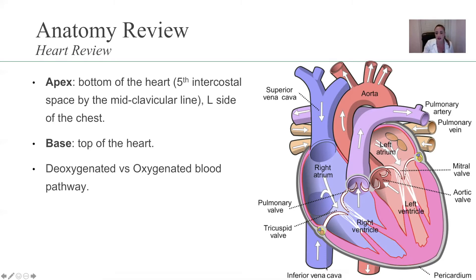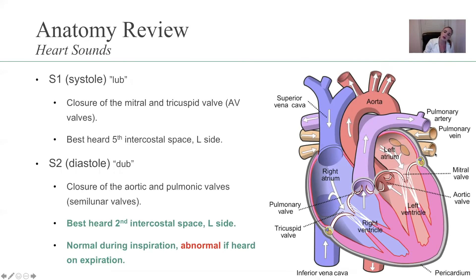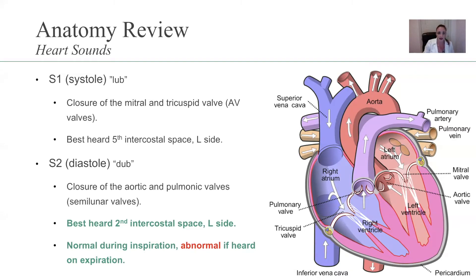What I need you to remember is the way oxygenated versus deoxygenated blood travels. You have the inferior vena cava — deoxygenated blood enters through the superior vena cava into the right atrium, right atrium to the right ventricle, out to the lungs through the pulmonary artery, into the lungs to pick up oxygen, comes back through the pulmonary vein, into the left atrium, into the left ventricle, pumped through the aorta to the rest of the body.